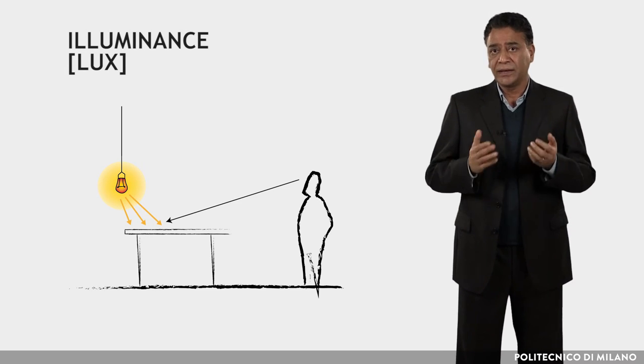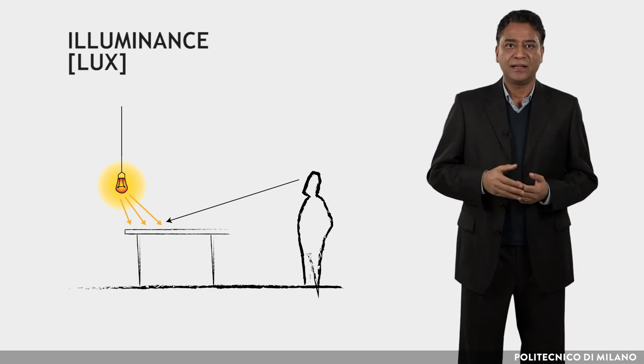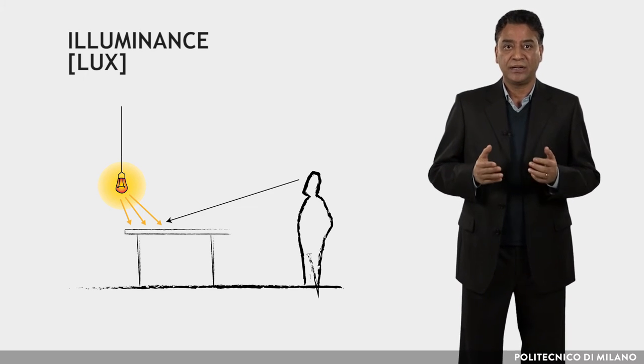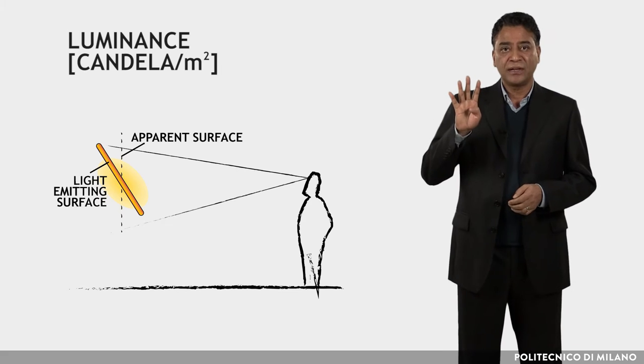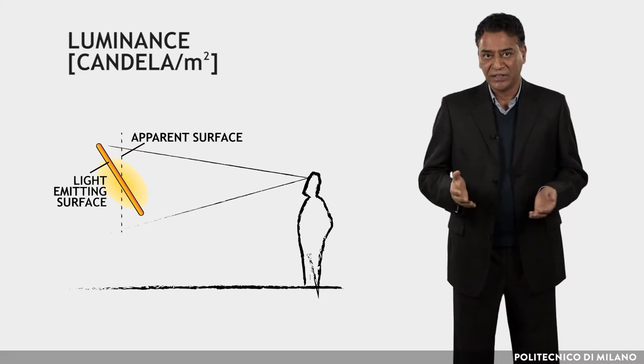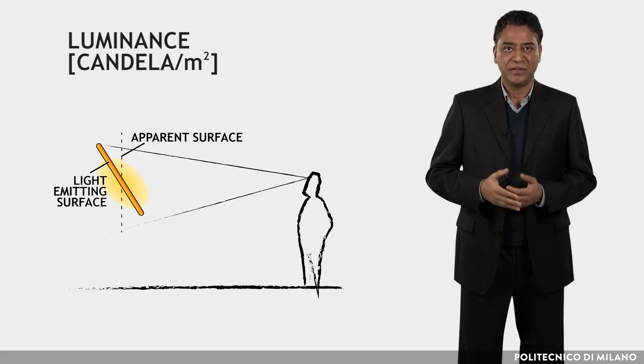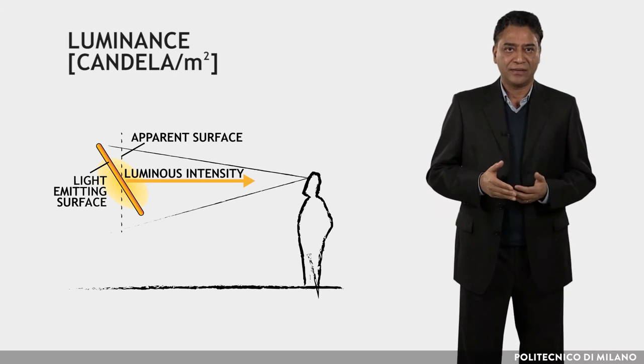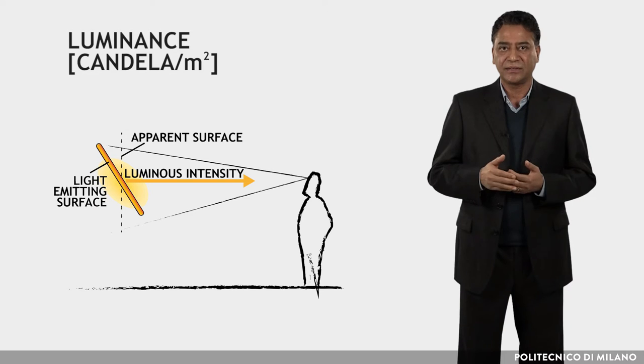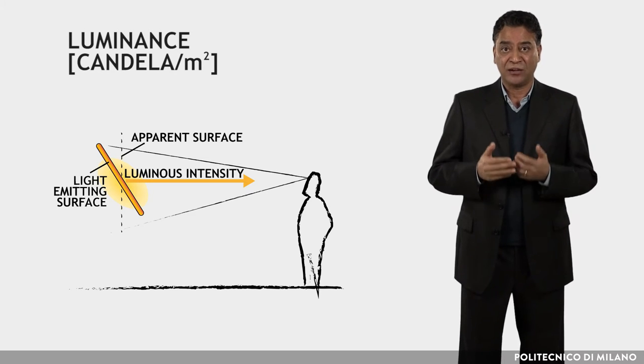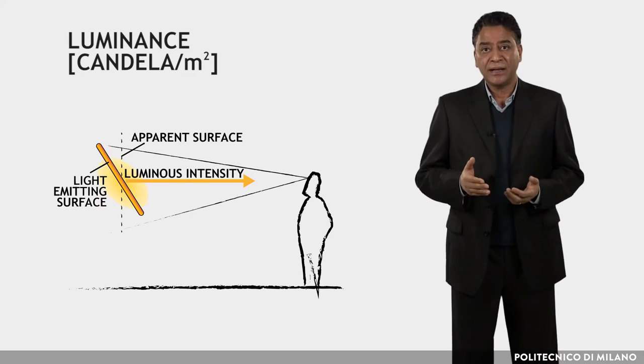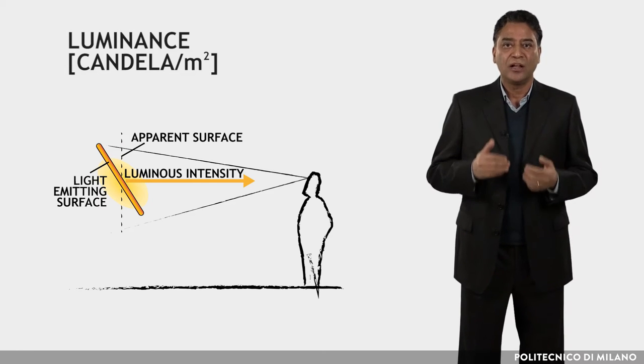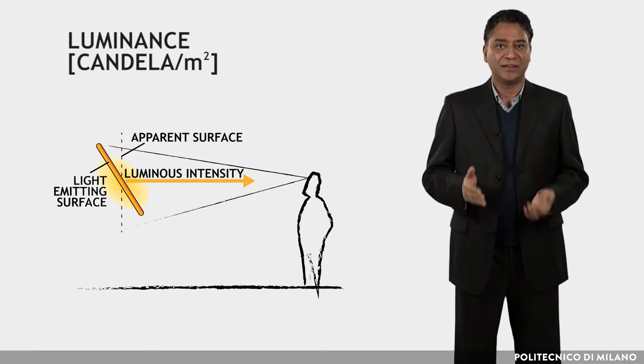The fourth one is luminance. The unit is candela per square meter. It is the ratio of the luminous intensity emitted by a surface in a given direction to the apparent area of the surface. That apparent area is the projection of the surface on a plane normal to the direction considered.